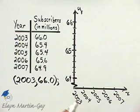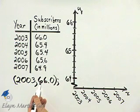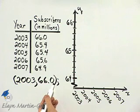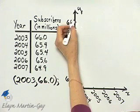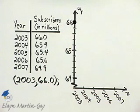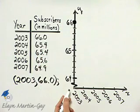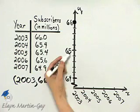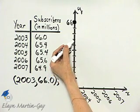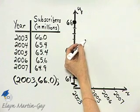For this first ordered pair, here's my year 2003 and then the subscribers 66.0 — there we go. For 2004, it's 65.4, so here at 65.2, 65.4 — there we go for 2004.